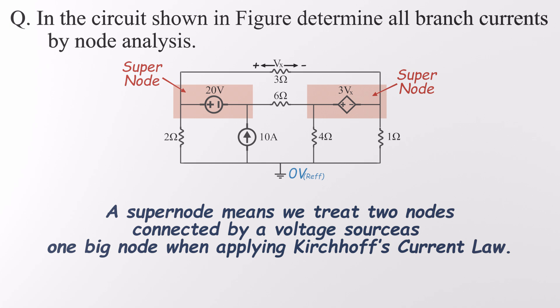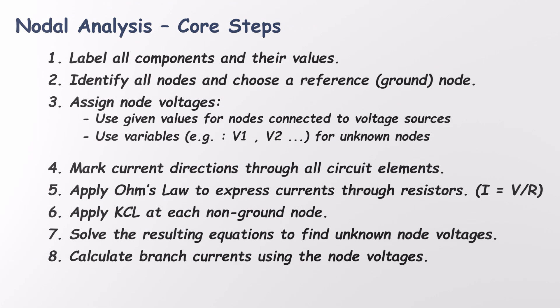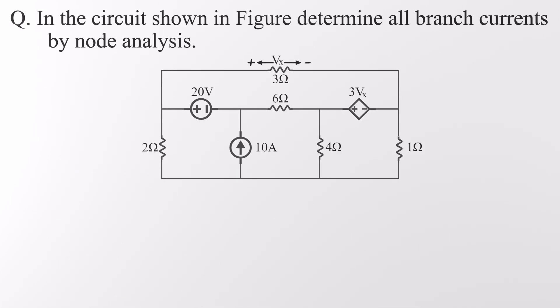All right, let's tackle this circuit step by step. We'll be using the standard eight-step method for nodal analysis. It's logical, it's easy to follow, and once you get the hang of it, it's smooth sailing. And if you ever want a refresher, we've linked a full tutorial in the description. Here's the plan. We'll figure out the voltage at each node, measured relative to a common reference point, usually ground, by applying Kirchhoff's Current Law. Once we've got those voltages, finding the branch currents is a piece of cake. Ready to dive in? Let's get started.